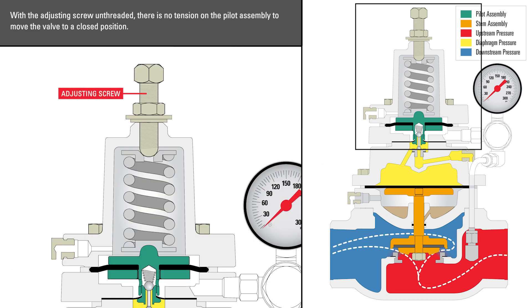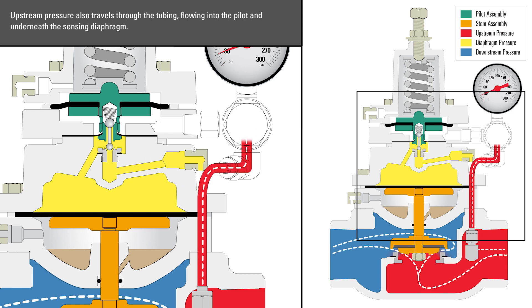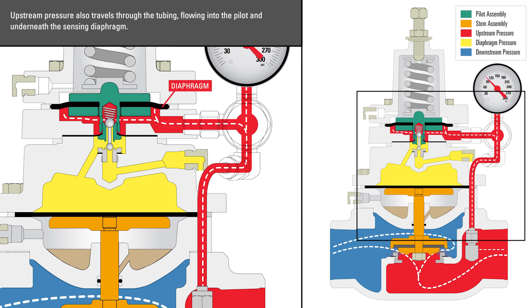With the adjusting screw unthreaded, there is no tension on the pilot assembly to move the valve to a closed position. Upstream pressure also travels through the tubing, flowing into the pilot and underneath the sensing diaphragm.